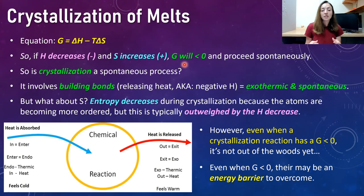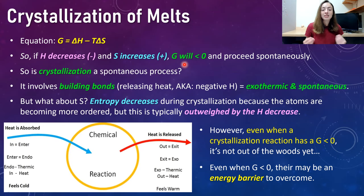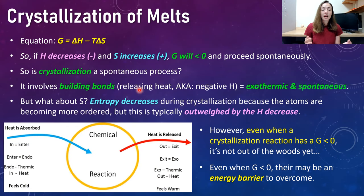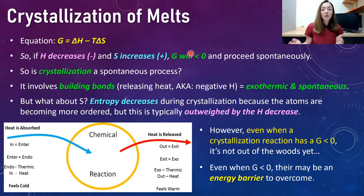Now the question is: is crystallization a spontaneous process? Crystallization is a melt going to a solid, so it involves building bonds, which releases heat — giving a negative change in H, meaning it would likely be exothermic and spontaneous. However, to determine whether it will occur spontaneously, we need to also consider S or entropy. Entropy will likely decrease during crystallization because the atoms are becoming more ordered, not less. However, this is typically outweighed by the H decrease, so you will likely get a G value still lower than zero.